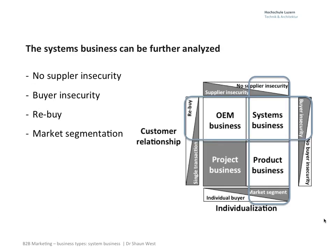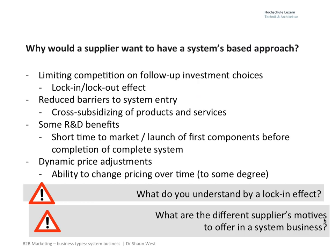Systems business: limited supplier insecurity, but the buyer is very insecure. There are re-buy opportunities and you tend to deal with market segmentations as opposed to individual buyers. Why would we want to have a systems approach? We create a lock-in — we basically create the opportunity to maintain a monopoly. This is a very powerful position for us to be in and allows us to take advantage of the situation.